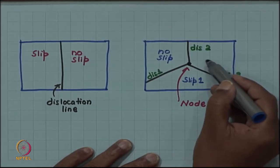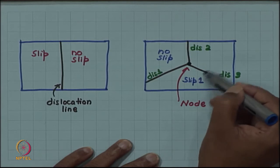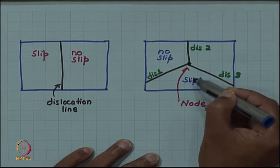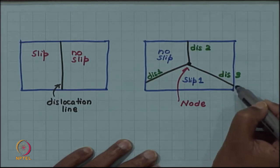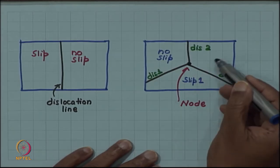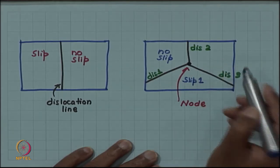If this region was also slip 1, then there will be no differential slip between these two regions and this boundary or this dislocation line, dislocation line 3 will disappear. So there has to be some extra slip, some differential slip as I cross this line.